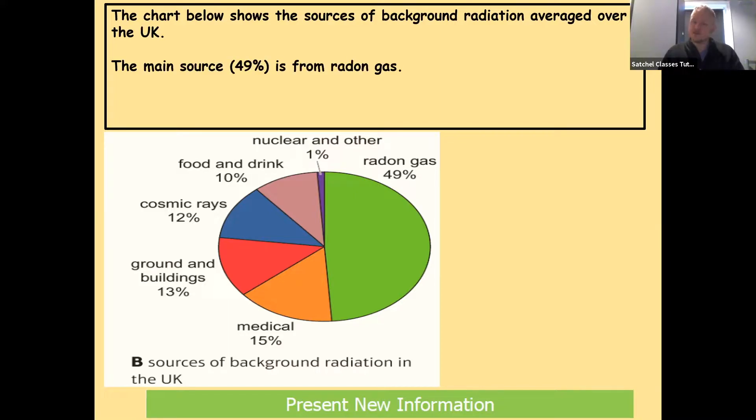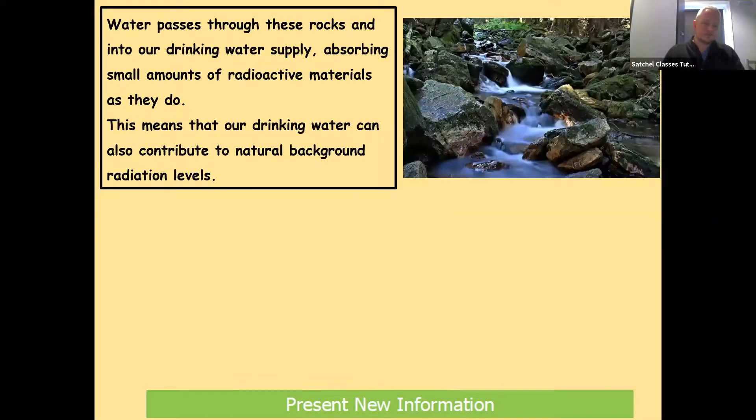The main source, 49%, is from radon gas. Radon is a radioactive gas that's produced by rocks that contain a small amount of uranium. Water passes through these rocks and into our drinking water supply, meaning that the water absorbs small amounts of radioactive materials from the rocks. This means that our drinking water can also contribute to natural background radiation levels.